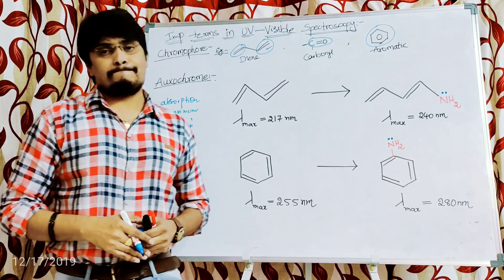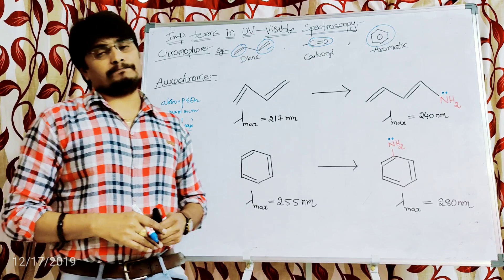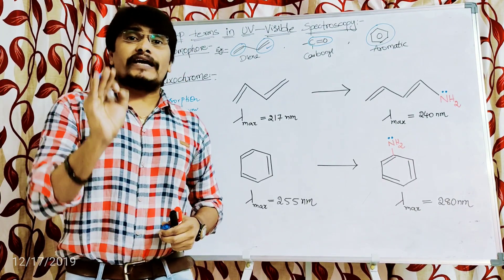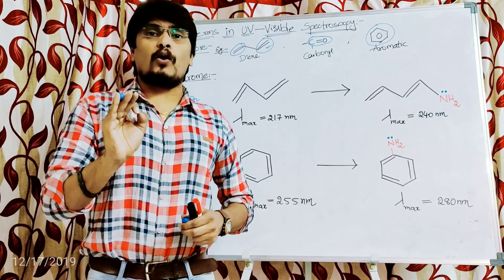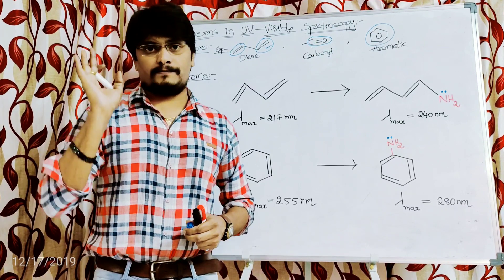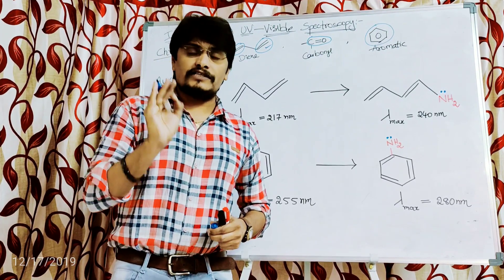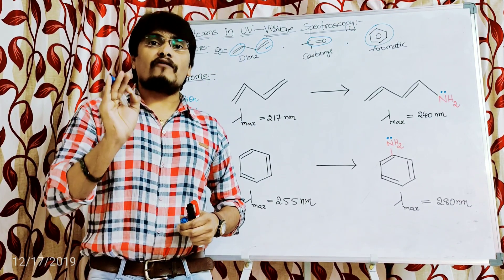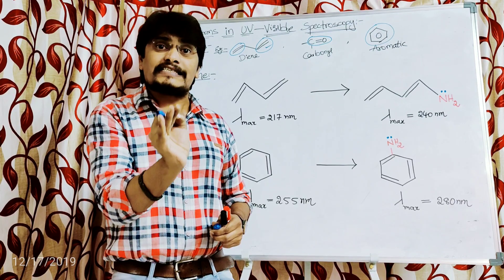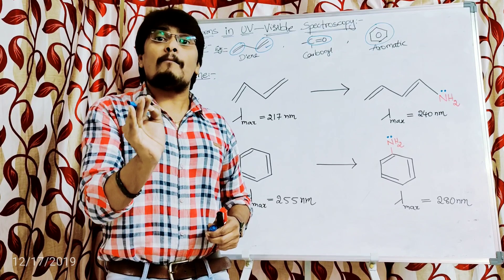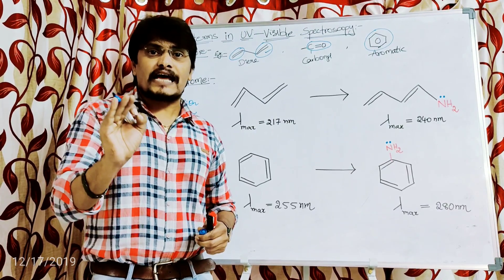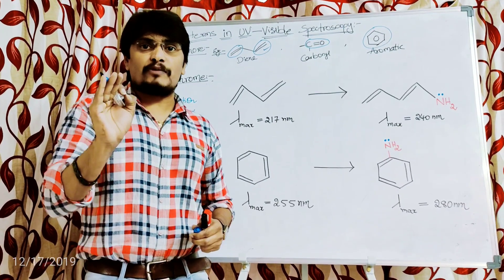That relation is: the number of electrons involved in conjugation is directly proportional to the absorption maximum or lambda max. With the help of this relation we can understand how the auxochrome, which is directly attached to the unsaturated moiety, is enhancing the absorption maximum or lambda max.